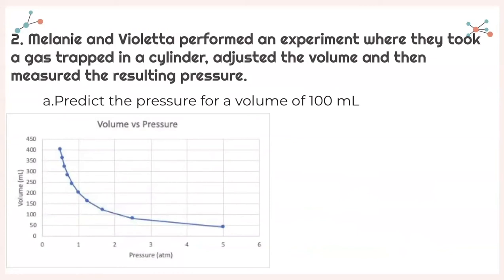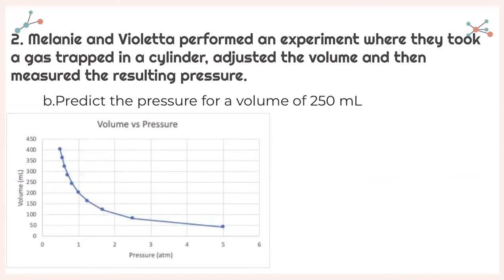For number 2, Melanie and Violetta performed an experiment where they took a gas trapped in a cylinder, adjusted the volume, and measured the resulting pressure. You are given data and told to graph it — I already graphed it for us. For part A, predict the pressure for a volume of 100 milliliters. Looking at where 100 milliliters is on our graph, it looks like it's about 2 atmospheres. For part B, predict the pressure for a volume of 250 milliliters — looking at the graph, that's about 0.85 atmospheres.